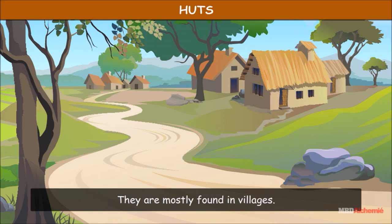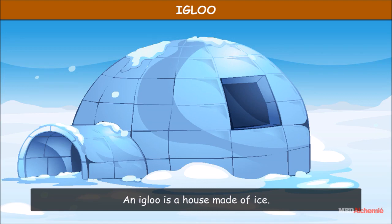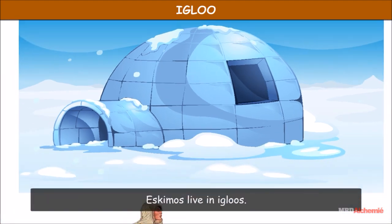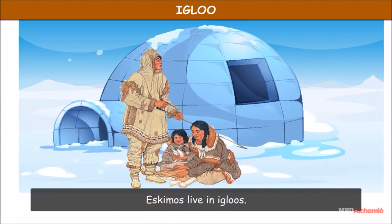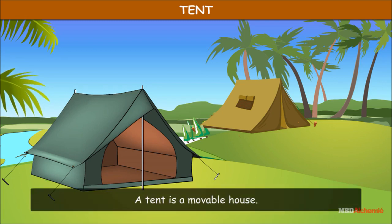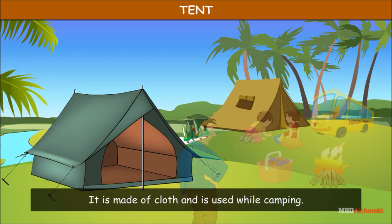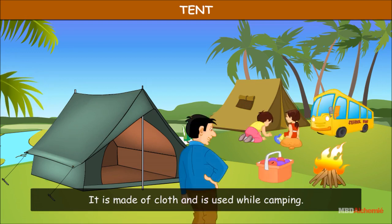An igloo is a house made of ice. Eskimos live in igloos. A tent is a movable house. It is made of cloth and is used while camping.